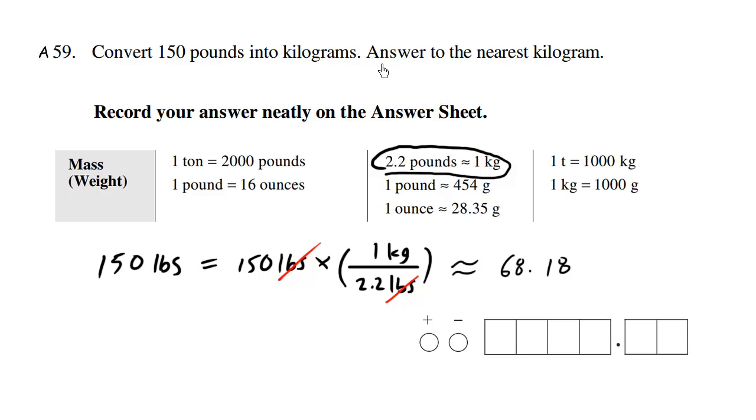Now, what we have here in the question is that we're supposed to answer to the nearest kilogram. So rounding this answer, we get 68. Now on the provincial, it doesn't matter if we just write in 68 or if we even shade this positive in. That's up to you, it's optional.